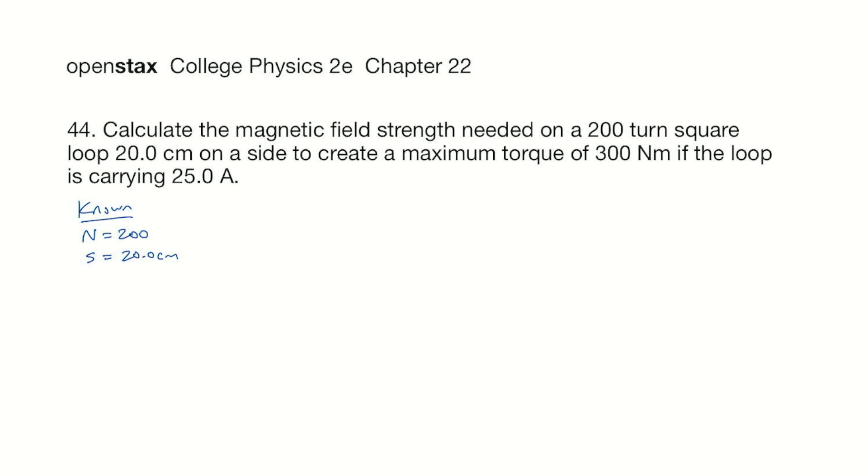So it's a 20 centimeter by 20 centimeter square loop. We know the torque is going to be maximum, and that's 300 newton meters. It's maximum, so that means theta is 90 degrees. And then we have the current I as 25.0 amps. And we are looking for magnetic field B.